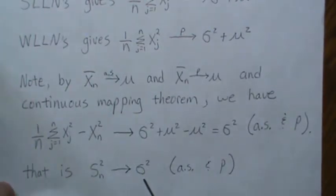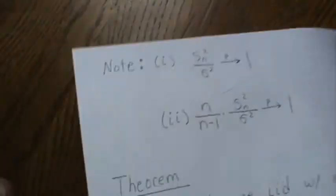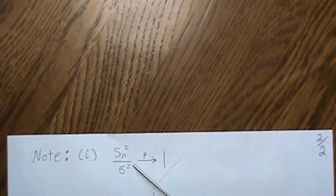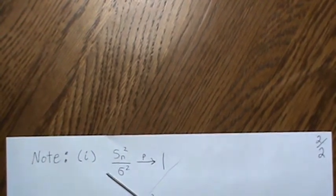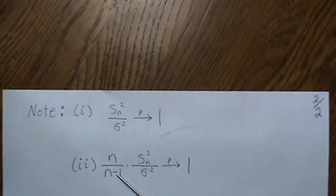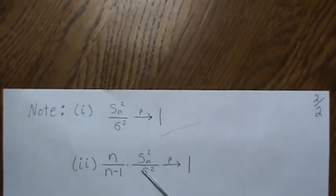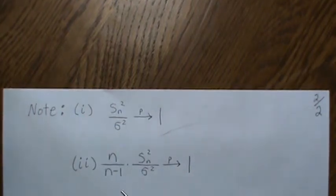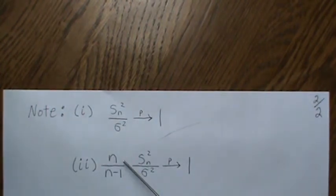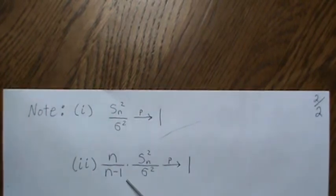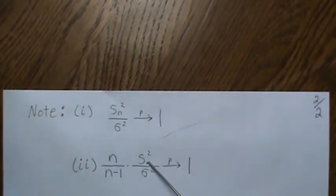So Sn² converges to σ² almost surely and in probability. A couple of notes: if you divide both sides by σ², this ratio converges to 1. Also, n/(n−1) is a sequence that converges to 1, so the product converges to 1×1 = 1. The n's cancel and dividing by n−1 gives the bias-adjusted sample variance — the one we all use when we calculate variance.